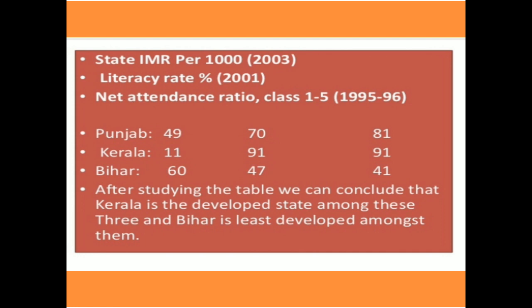Now let us look at other factors: Infant Mortality Rate (IMR) per 1,000, literacy rate according to 2001 data, and net attendance ratio for classes 1 to 5. Based on 1995–96 data, Punjab's IMR is 49.